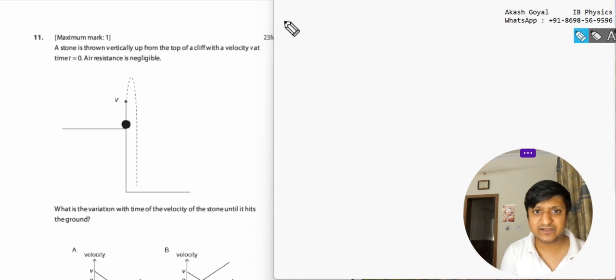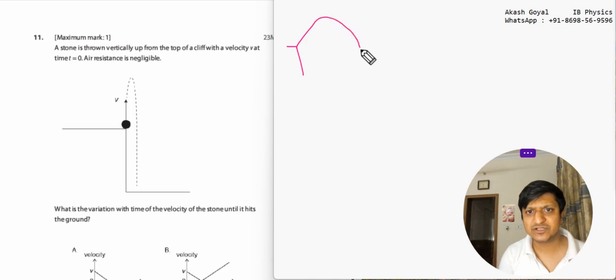We will break this event into two parts. It's a cliff and the stone goes like this. That's the cliff. At here the velocity will be 0 and here the velocity is v.